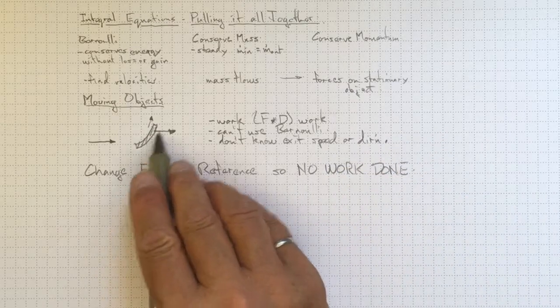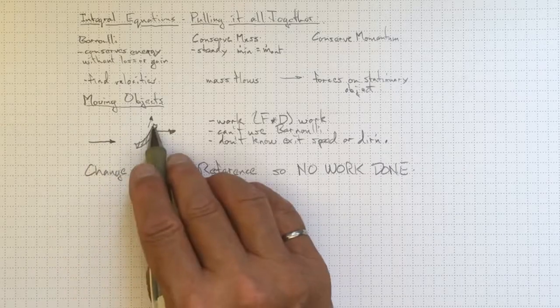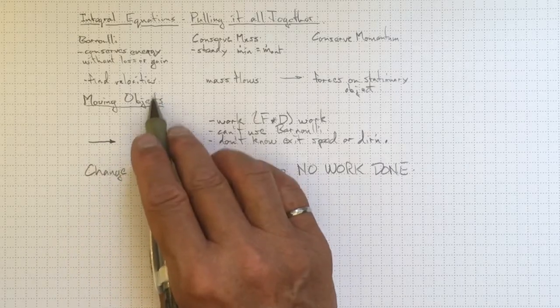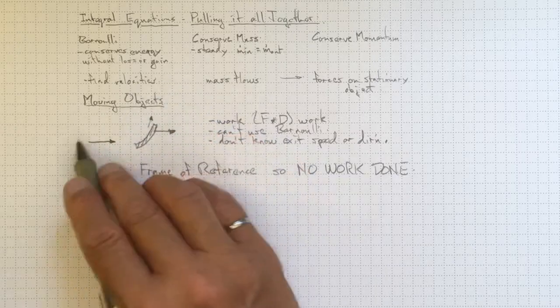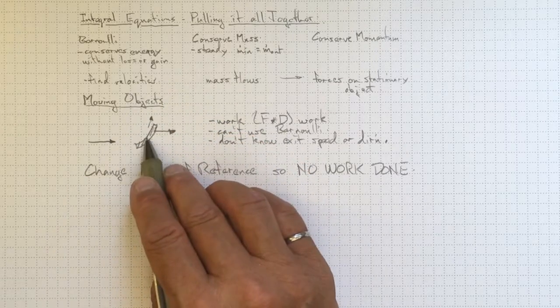If that blade was only sitting still, this jet would do no work on the blade. It would just get diverted off that way. It would go out with the same kinetic energy it came in with, and we know how to analyze that problem.